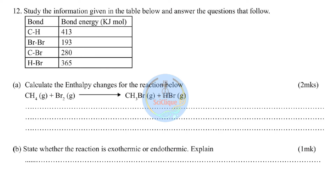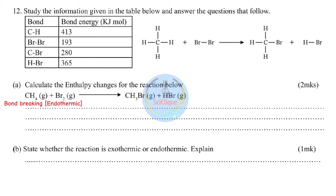Question twelve: calculate the enthalpy change for the reaction — methane reacting with bromine to form bromomethane and hydrogen bromide. Atoms in molecules are held together by chemical bonds. To react, you must break these bonds, which requires energy absorption. Breaking bonds is an endothermic process. Energy is needed to break C–H bonds in methane and Br–Br bonds in the bromine molecule.